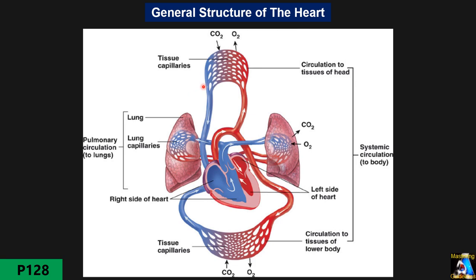Deoxygenated blood from the upper part of the body returns through the SVC (superior vena cava), and from the lower part through the IVC (inferior vena cava), to the right side of the heart — first the right atrium, then from the right atrium to the right ventricle, and through the pulmonary artery to the lungs.